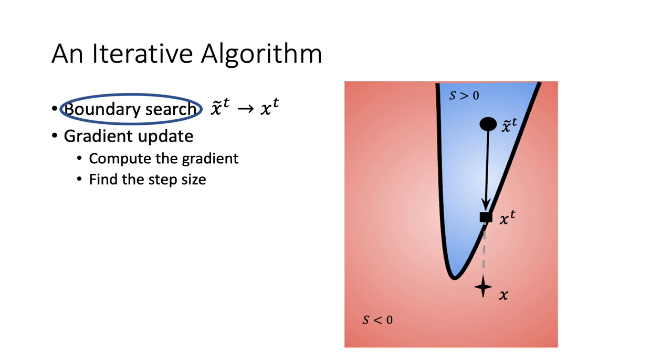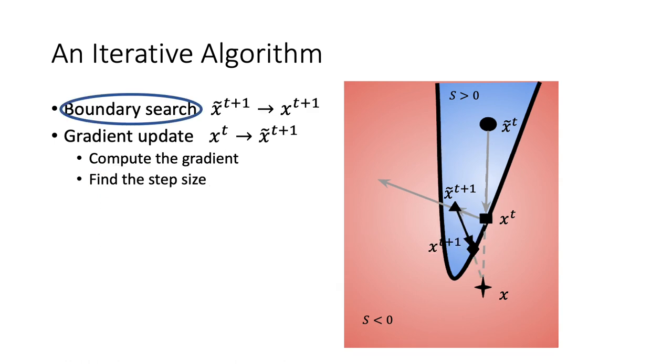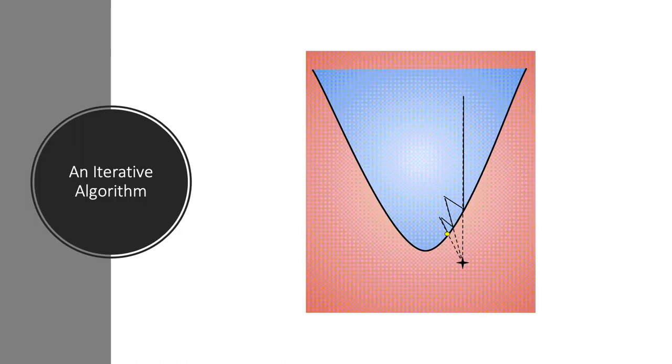In the first step, we do a binary search on the line connecting x_t and x to find its intersection with the boundary. In the second step, we compute the gradient at x_t, point x_t+1, and then we update from x_t with some pre-chosen step size, which is decreased until the updated point x_t+1 lies in the blue region. Then we do another binary search to find x̃_t+1.